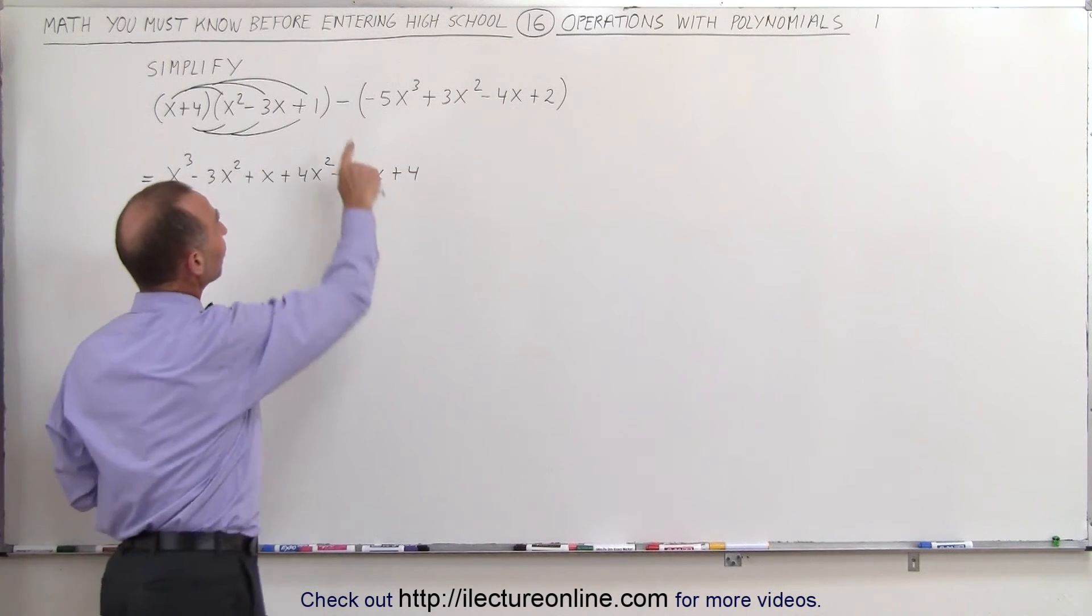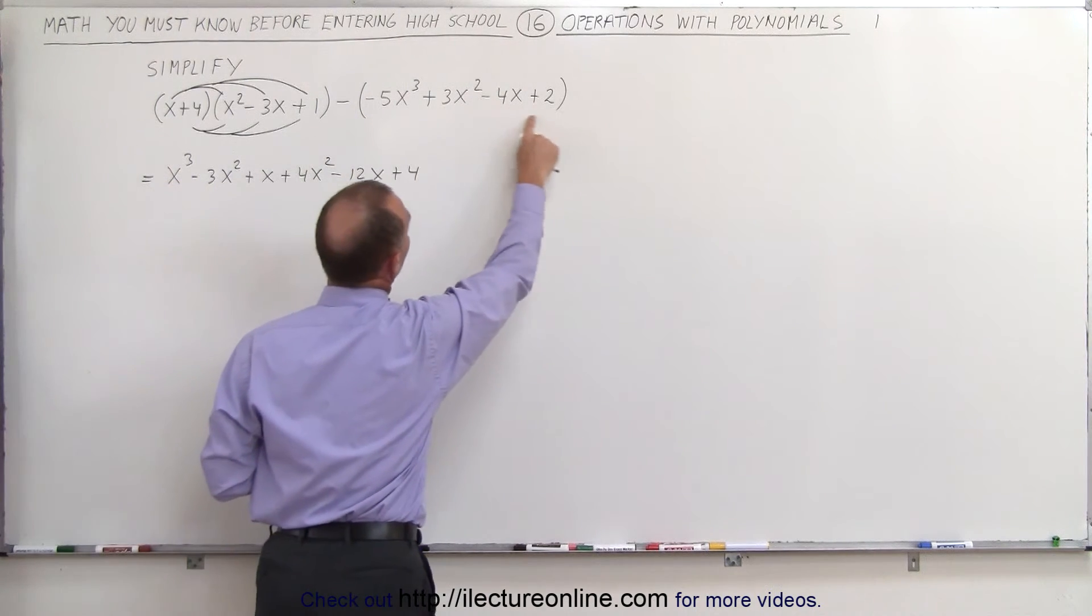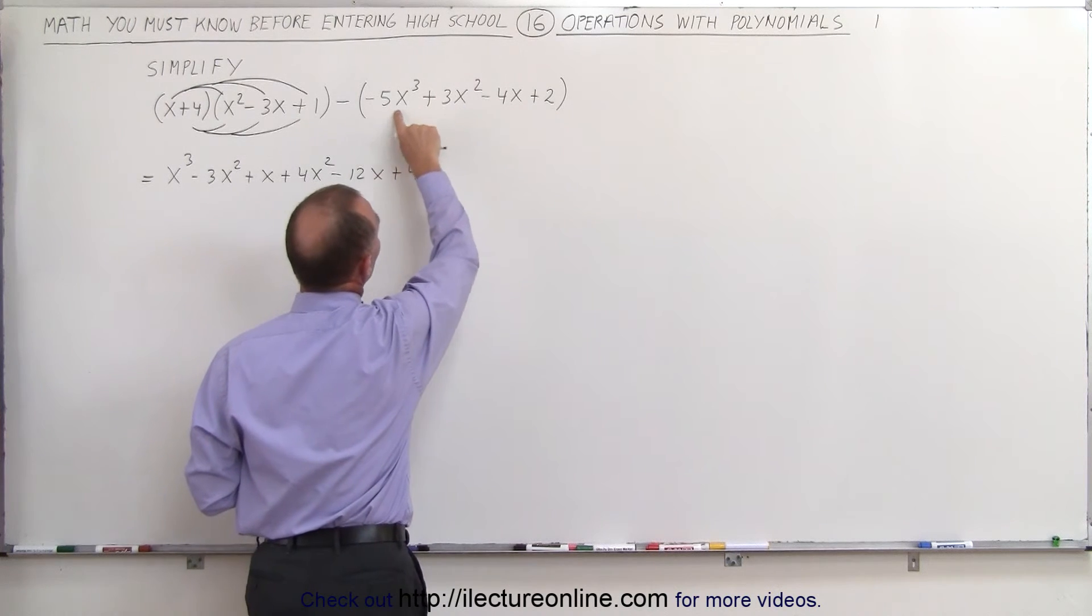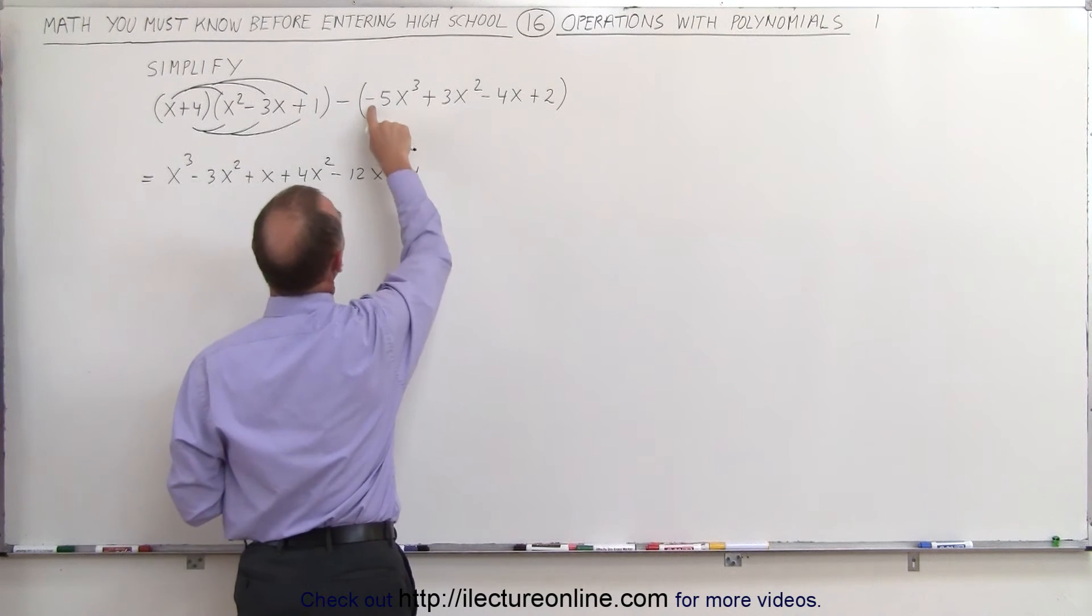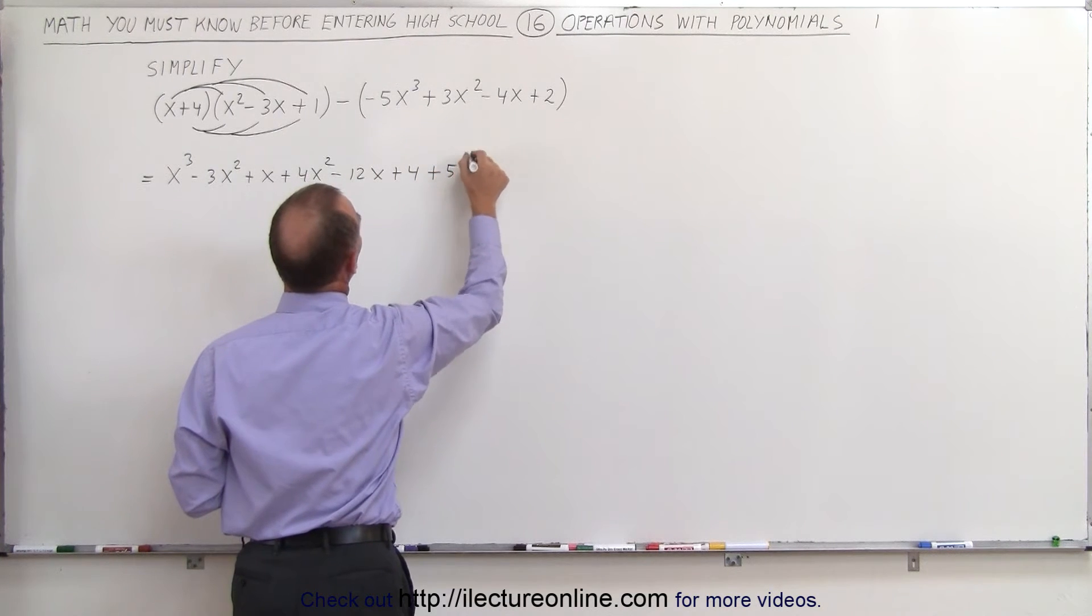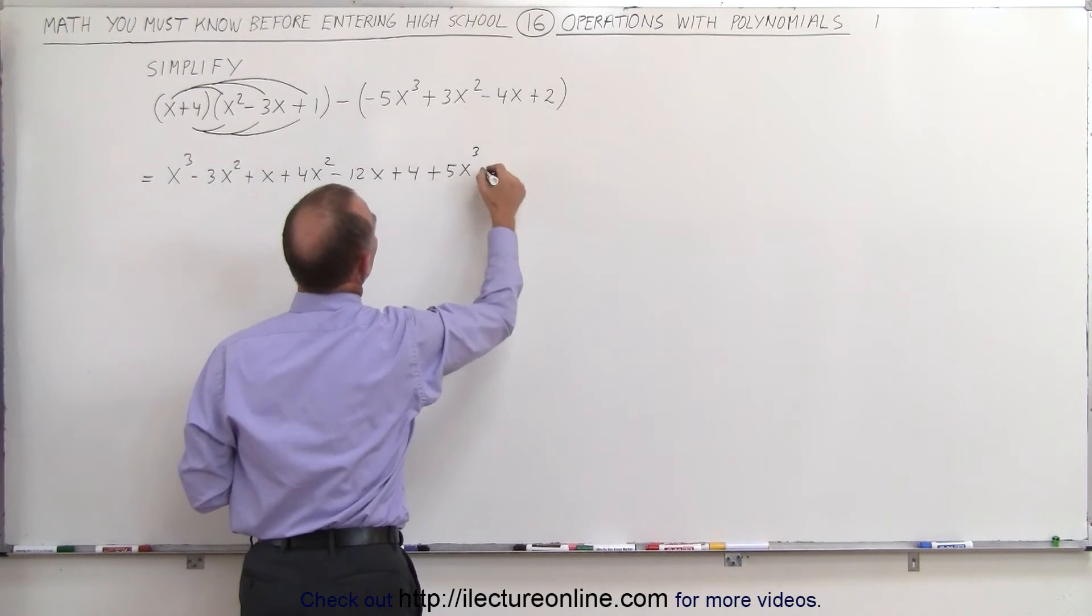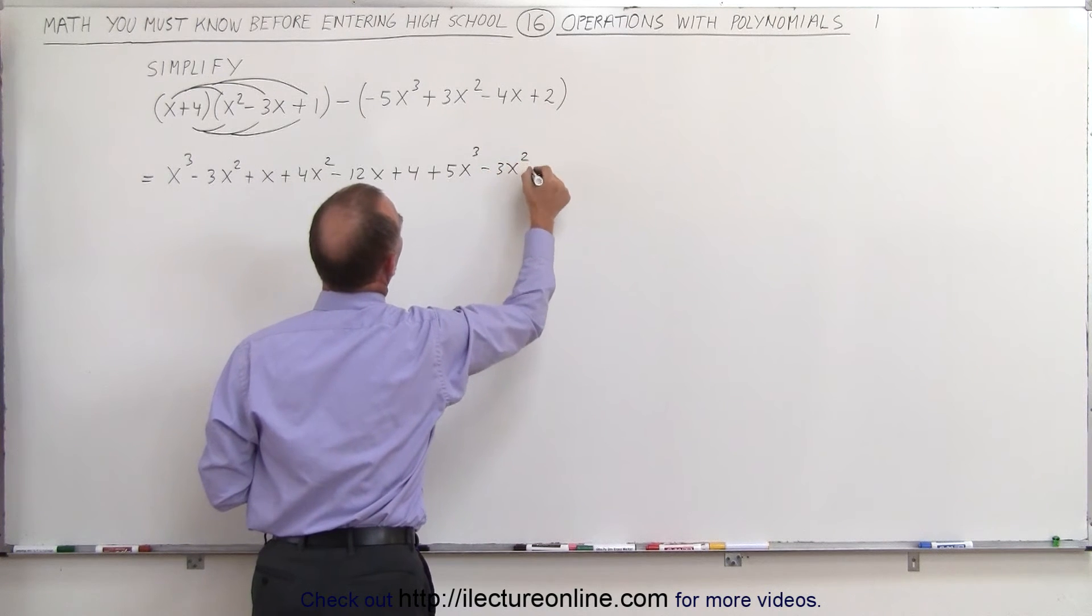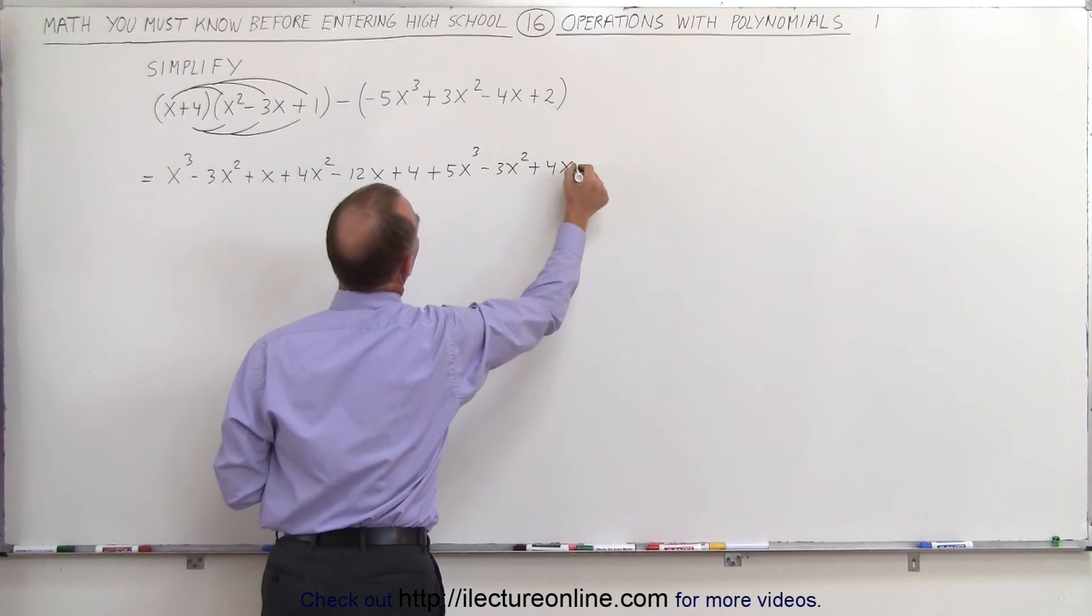Now we're also going to apply this negative sign to everything inside the parentheses here, which means we're going to change the sign of what's inside here. This negative times the negative becomes a positive, so this becomes plus 5x cubed minus 3x squared plus 4x minus 2.